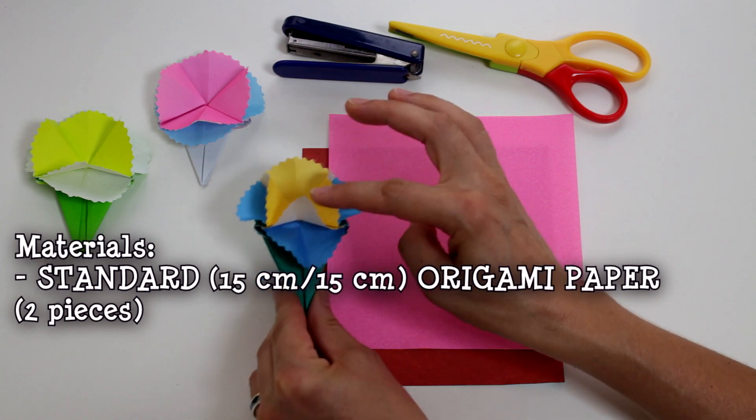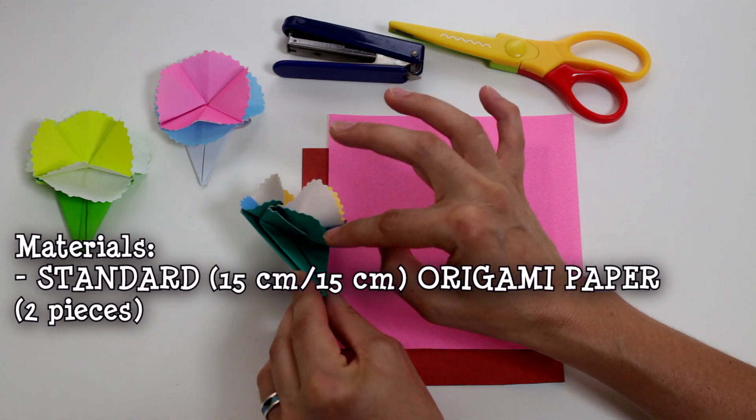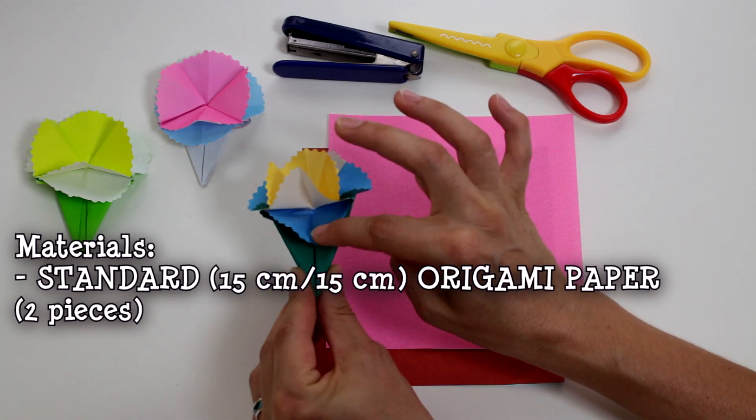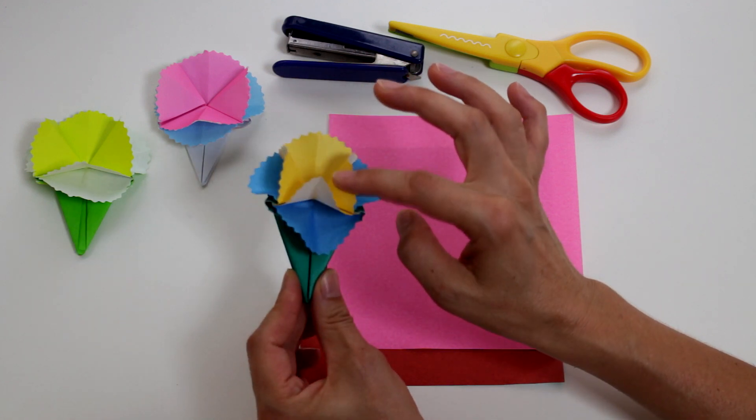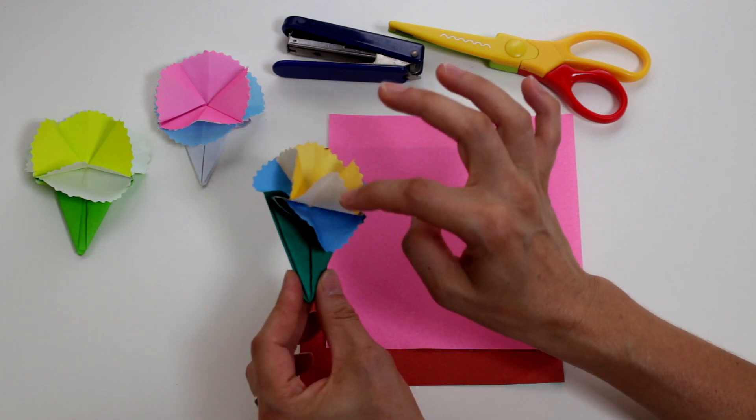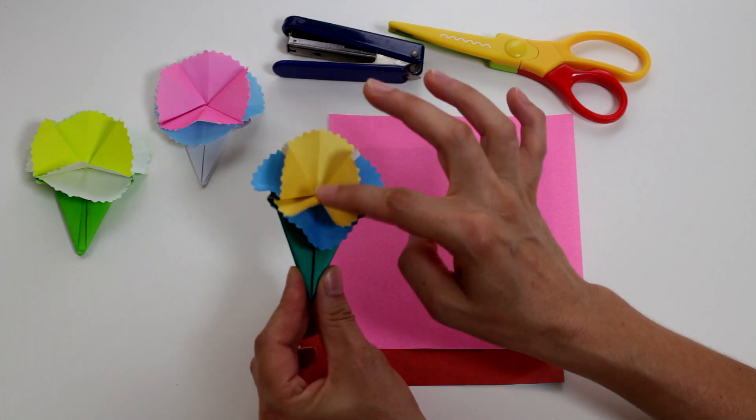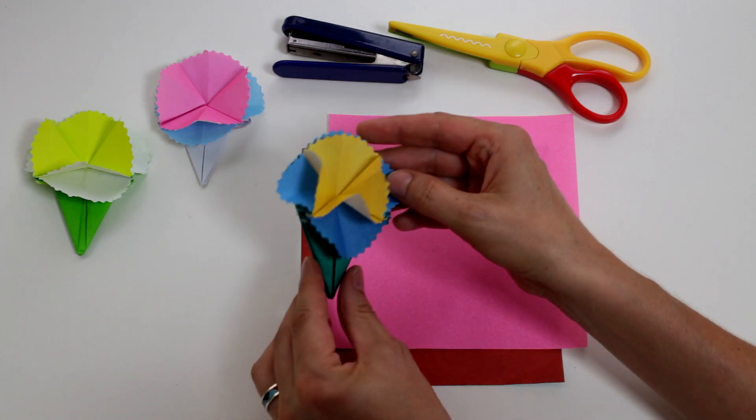It is made using two origami papers. One can be double-sided, that means two colors on both sides, or you can have regular origami papers that is white on one side and a different color on the other side.